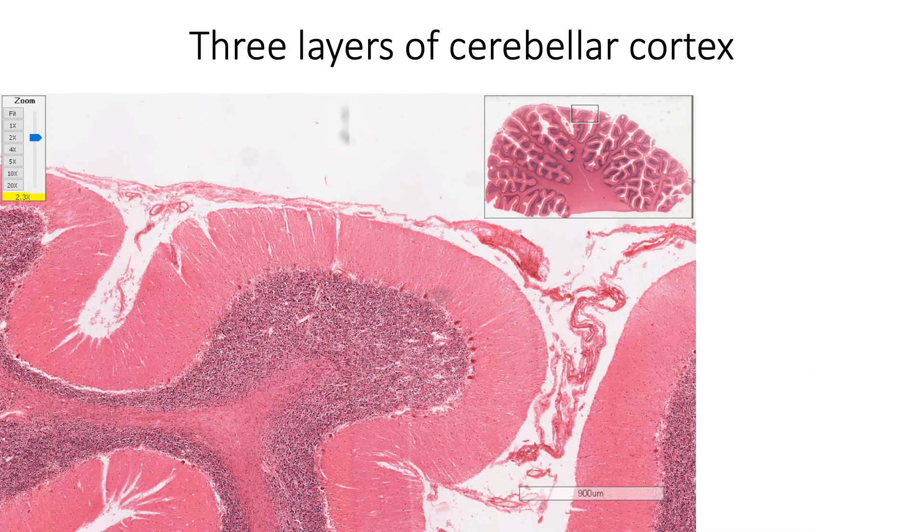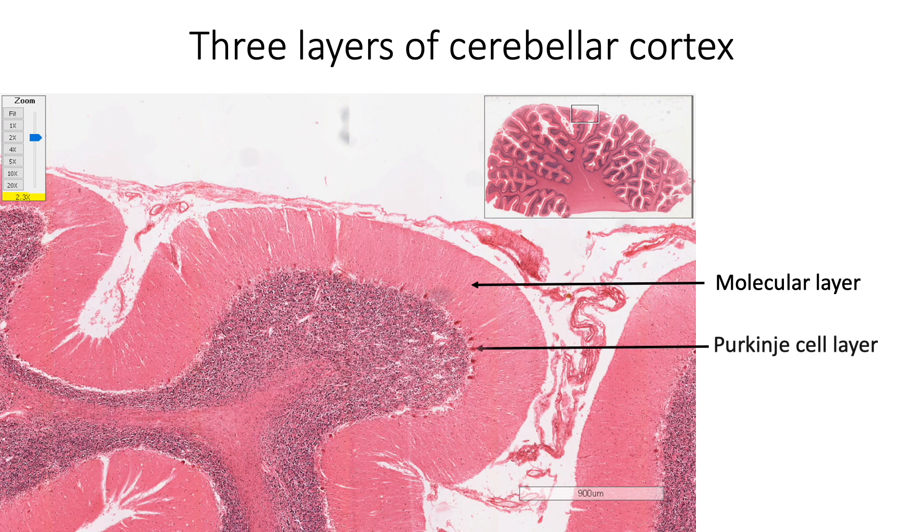There are three layers in the cerebellar cortex. Outermost layer is the pale staining molecular layer. Middle layer is a layer of Purkinje cells. Innermost layer is the densely basophilic granular layer.